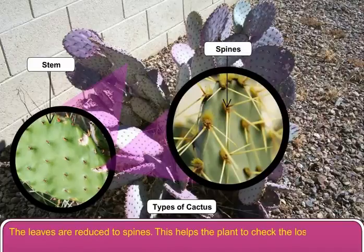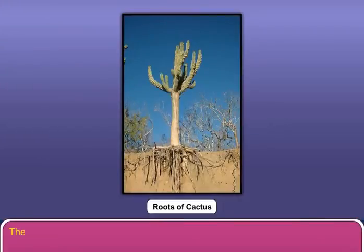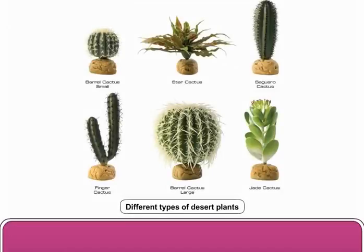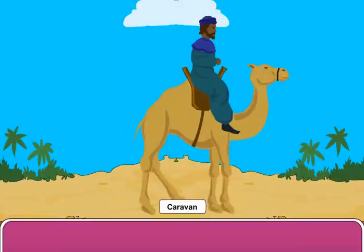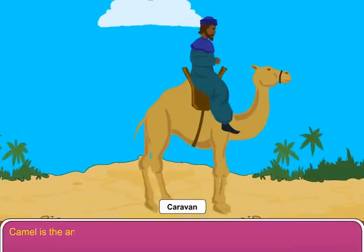The reduction of leaves to spines helps the plant to check the loss of water due to transpiration. The roots of cactus are very long and well developed. Plants that live in desert or areas of scarcity of water are called xerophytes or xerophytic plants.